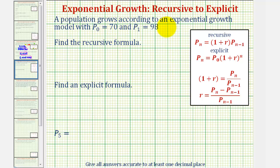A population grows according to an exponential growth model with p₀ equals seventy and p₁ equals ninety-eight. We want to find the recursive formula, the explicit formula, and then find p of five.